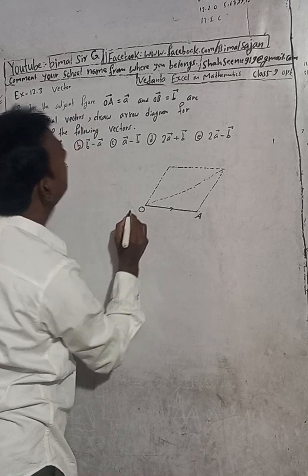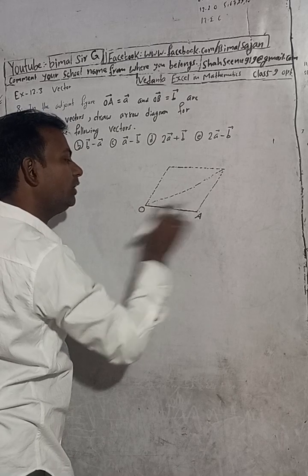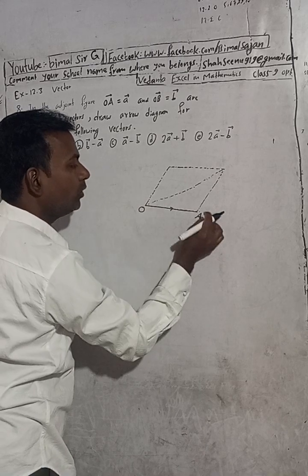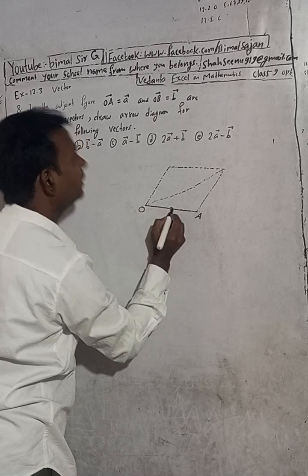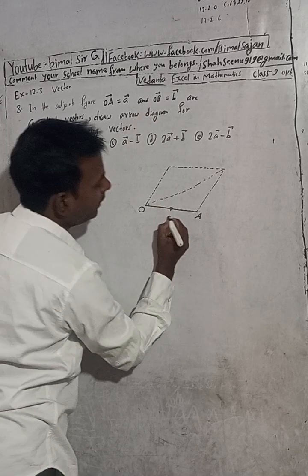OA vector means in the OA direction, not AO direction. OA direction means from O to A, this direction. In the same way, this is A vector.